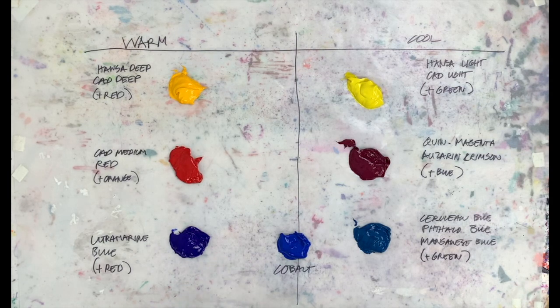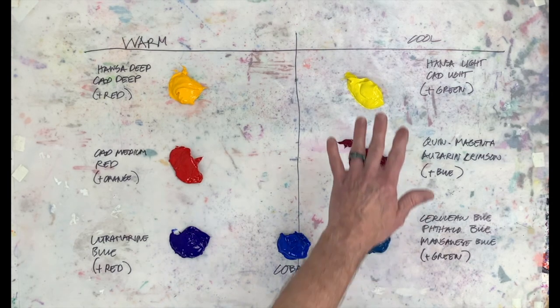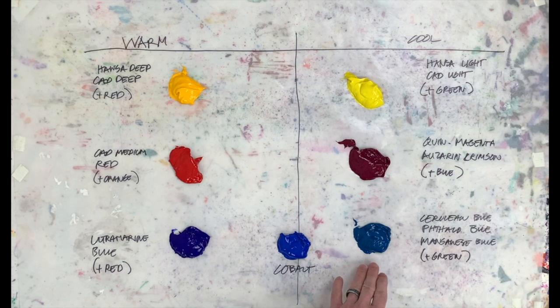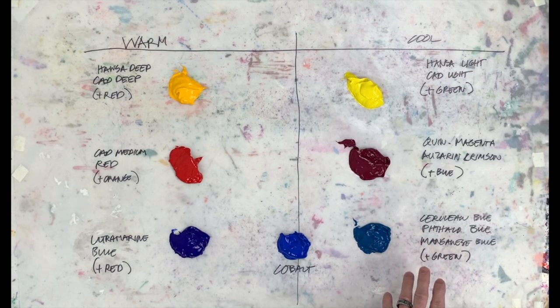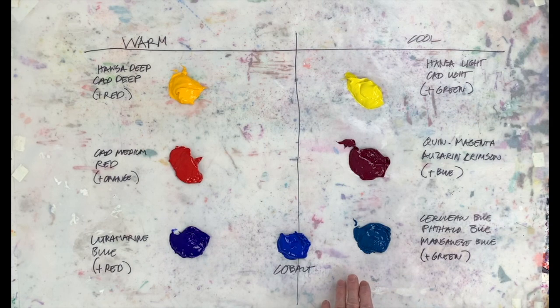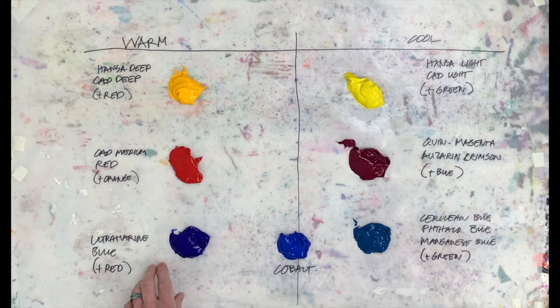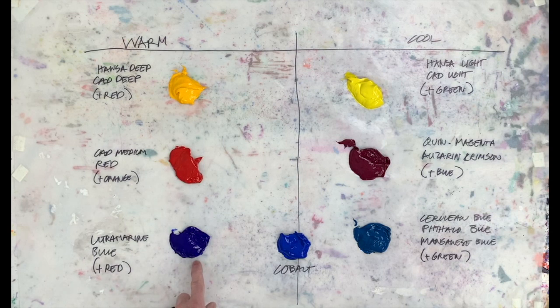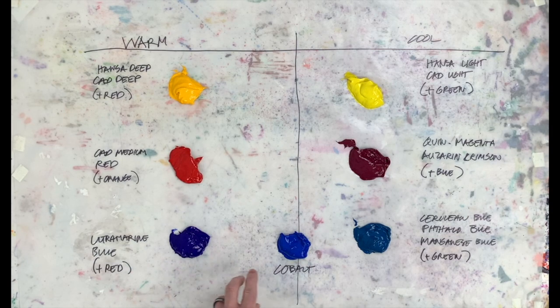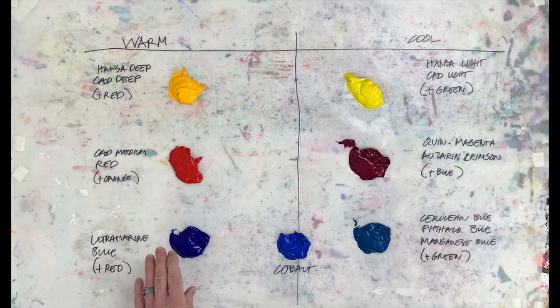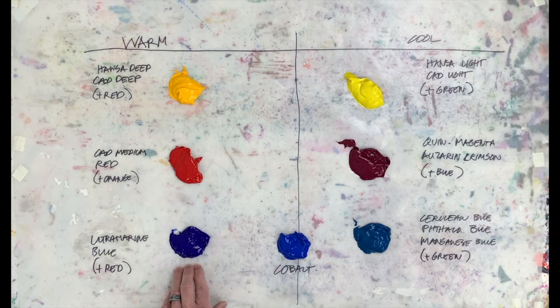Let's look at the blues. A cool blue, this is cerulean blue, but typically would be cerulean blue, phthalo blue, manganese blue. There's tons of cool blues. But when it comes to warm blue, there's really only one, and that's ultramarine blue. The ultramarine blue, as you can see, is much warmer than this and it's warm because it has red in it.